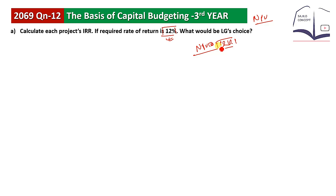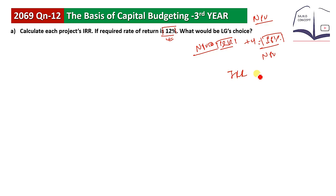We are going to do the IRR in steps. We will try 16% and calculate NPV. If NPV is positive, we need a higher rate; if NPV is negative, we note that. We will also try 12% and check whether NPV is positive or negative, then use interpolation.